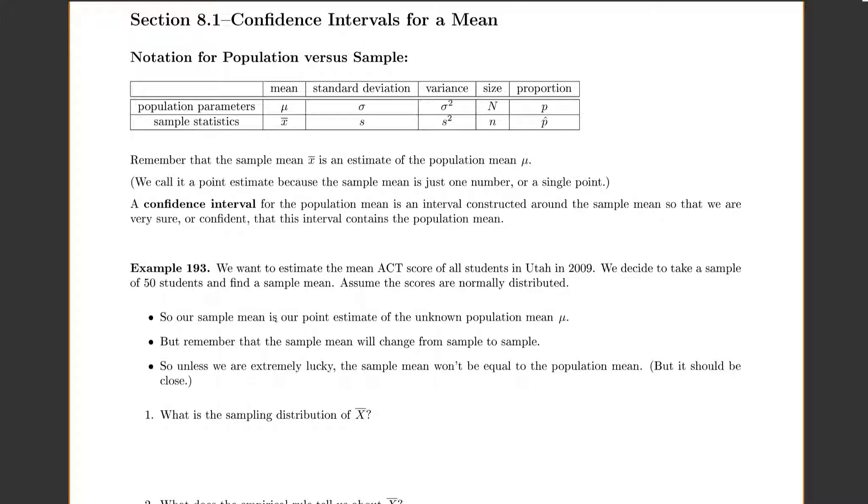But we're going to start with confidence intervals for a mean. Again, here's all of our notation. You just kind of want to keep this in mind and memorize these. So remember we talked about in the last chapter that our sample mean x-bar is an estimate of our population mean mu. And we called it a point estimate because it was just one number or a single point.